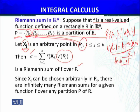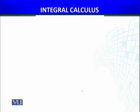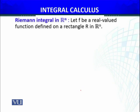It means for each partitioning I will have infinitely many Riemann sums. There are infinitely many Riemann sums, and I have infinitely many partitionings also. Since X_j can be chosen arbitrarily in R_j, there are infinitely many Riemann sums for a given function f over any partitioning P of R.